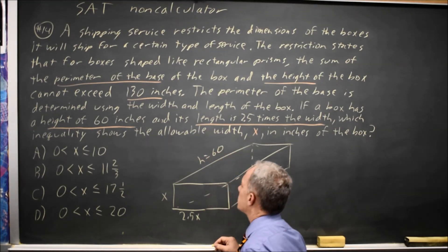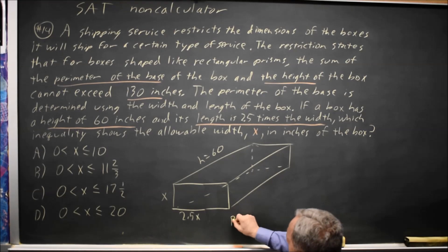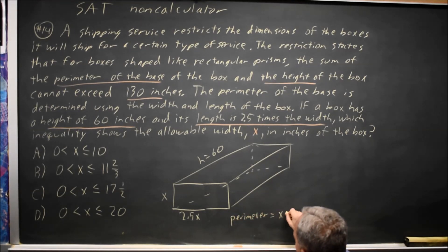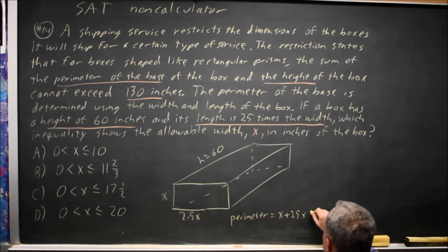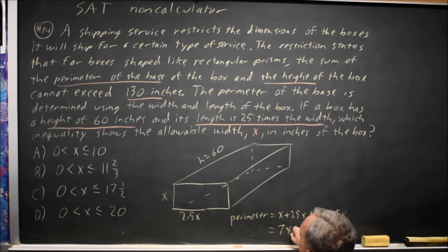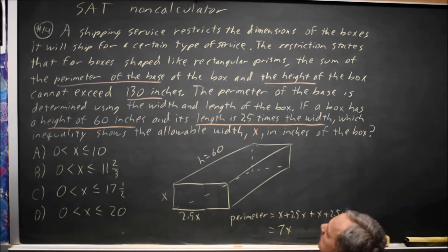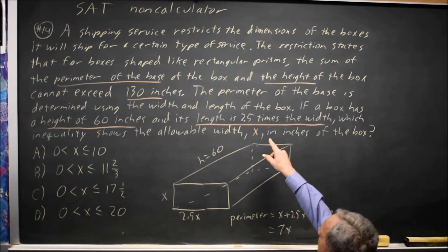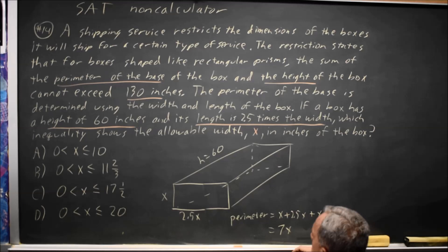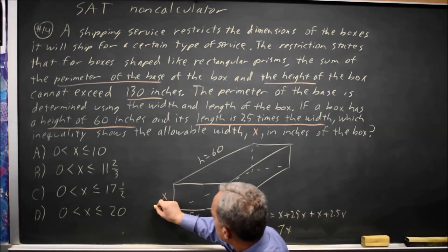So the perimeter of the base equals x plus 2.5x here and here plus another x plus another 2.5x, so that's 3.5x plus 3.5x is 7x where x is the width and length is larger than the width. So x equals width.